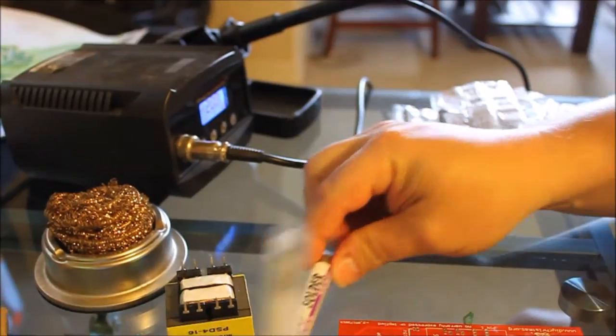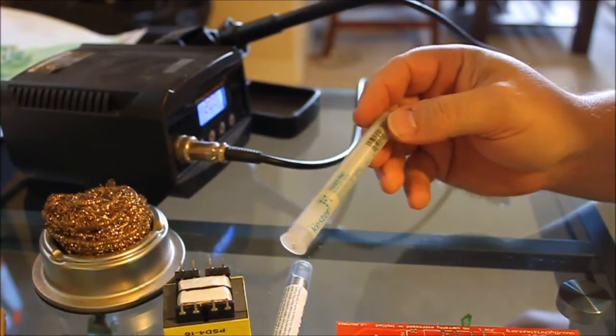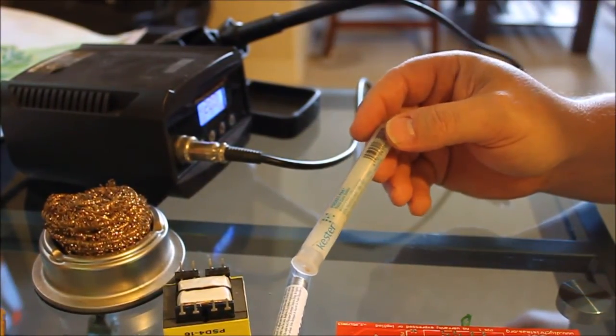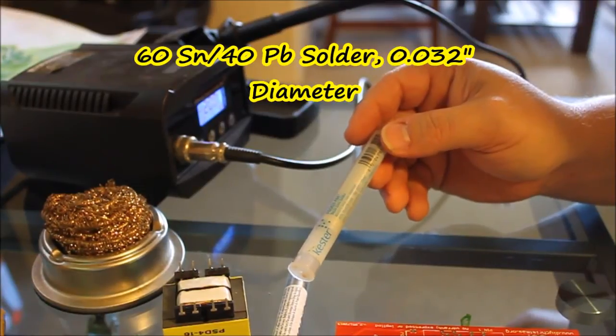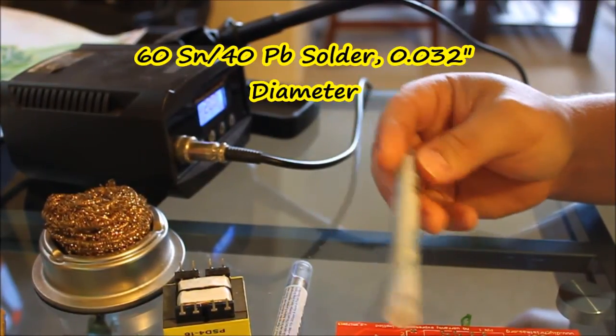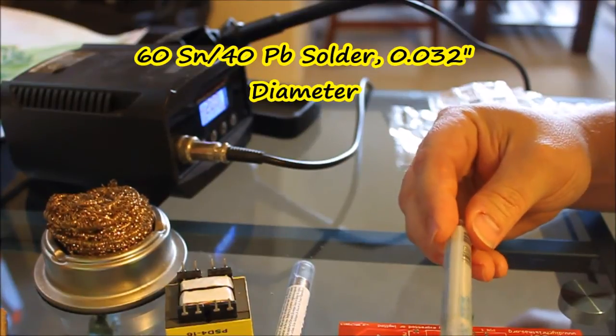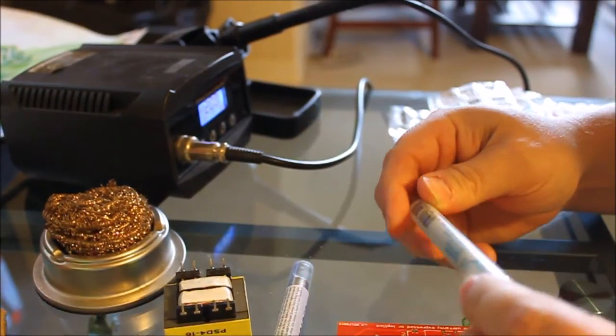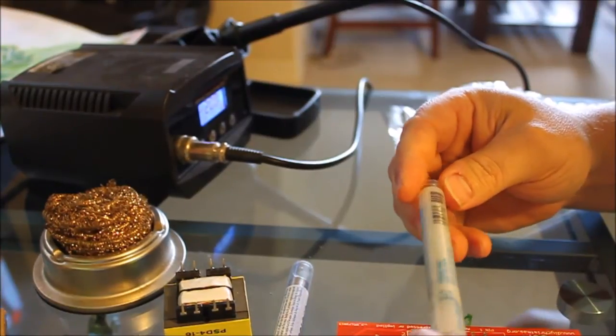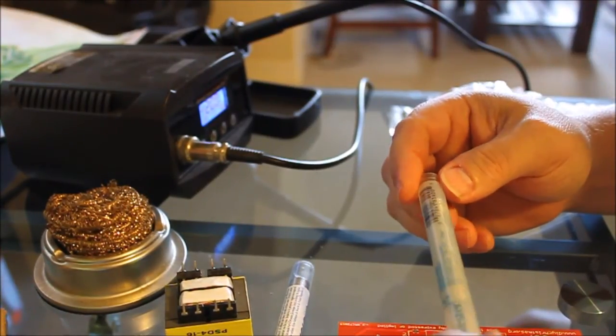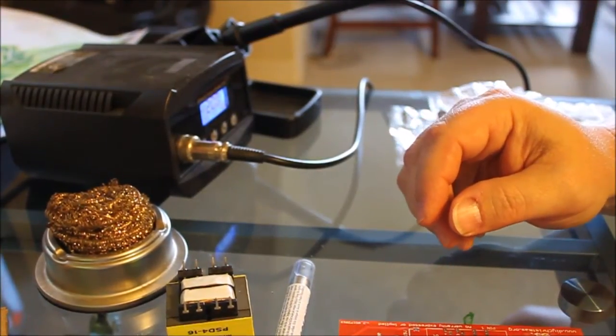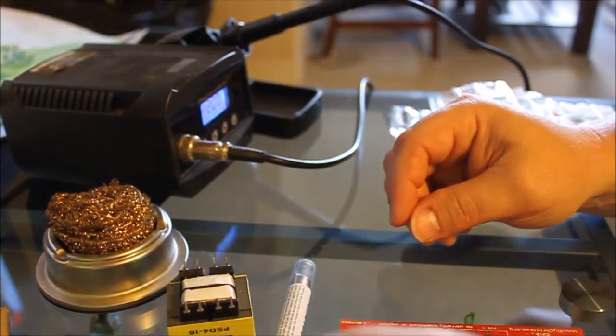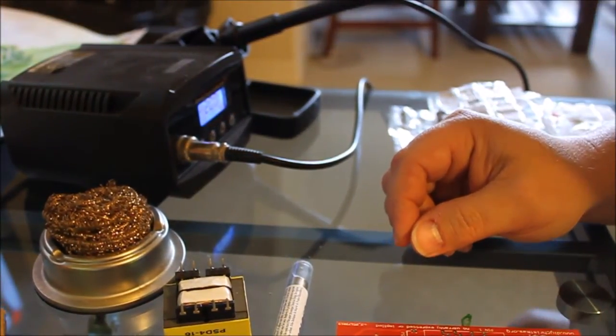We have another version here. This is from Kester. This happens to be a 60/40 blend and it is also 0.032. Now why the difference between 60/40 and 63/37? It's a matter of personal preference, but myself and others feel that the 63/37 flows into a joint much easier and much more reliable than the others.